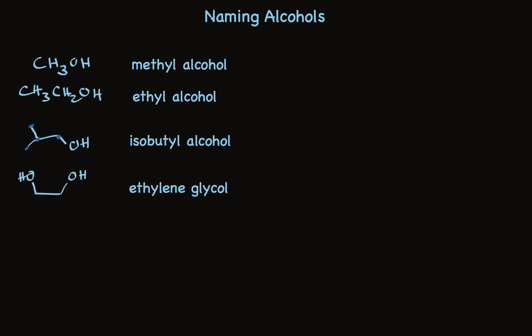There are a couple of special cases with common names you should be familiar with. One is ethylene glycol — it doesn't contain a double bond, but we call it ethylene glycol because it's made from ethylene, and glycols are diols. So this is a two-carbon diol used in antifreeze. Propylene glycol is the one made from propylene and it too is used in antifreeze.